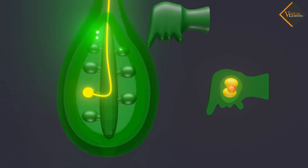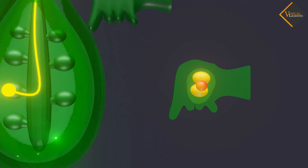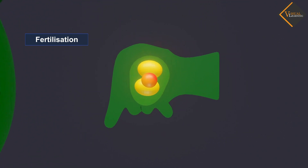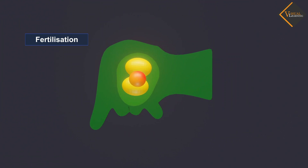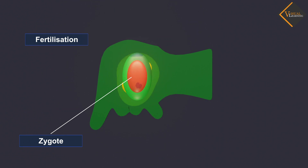This fusion of the germ cells, or fertilization, gives us the zygote, which is capable of growing into a new plant.